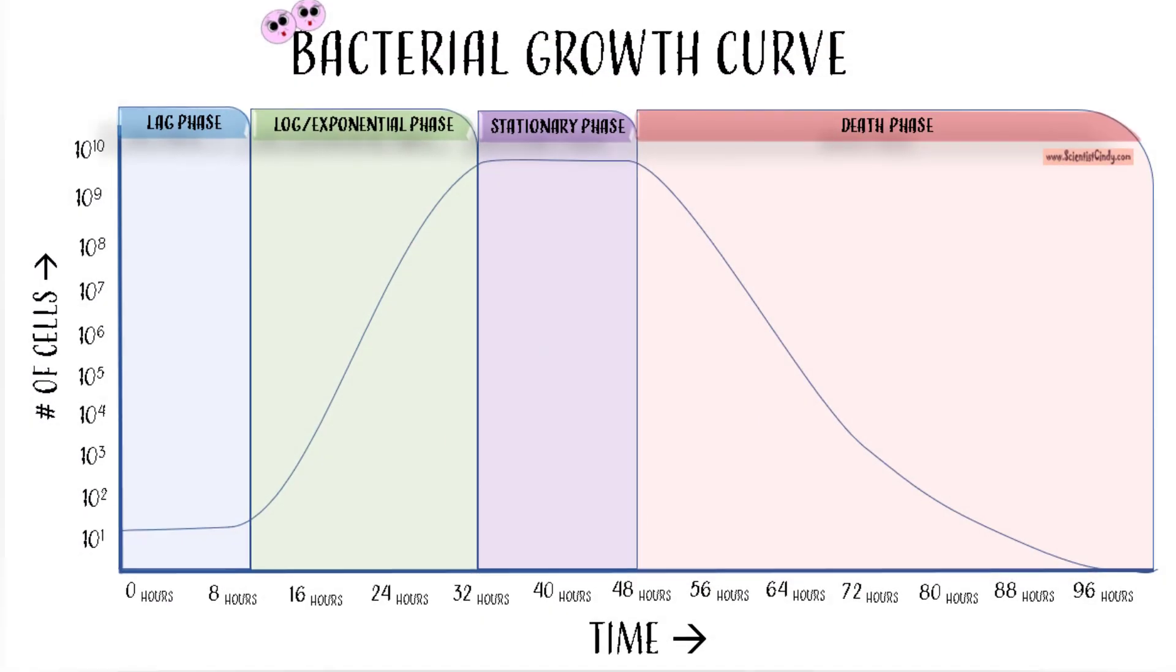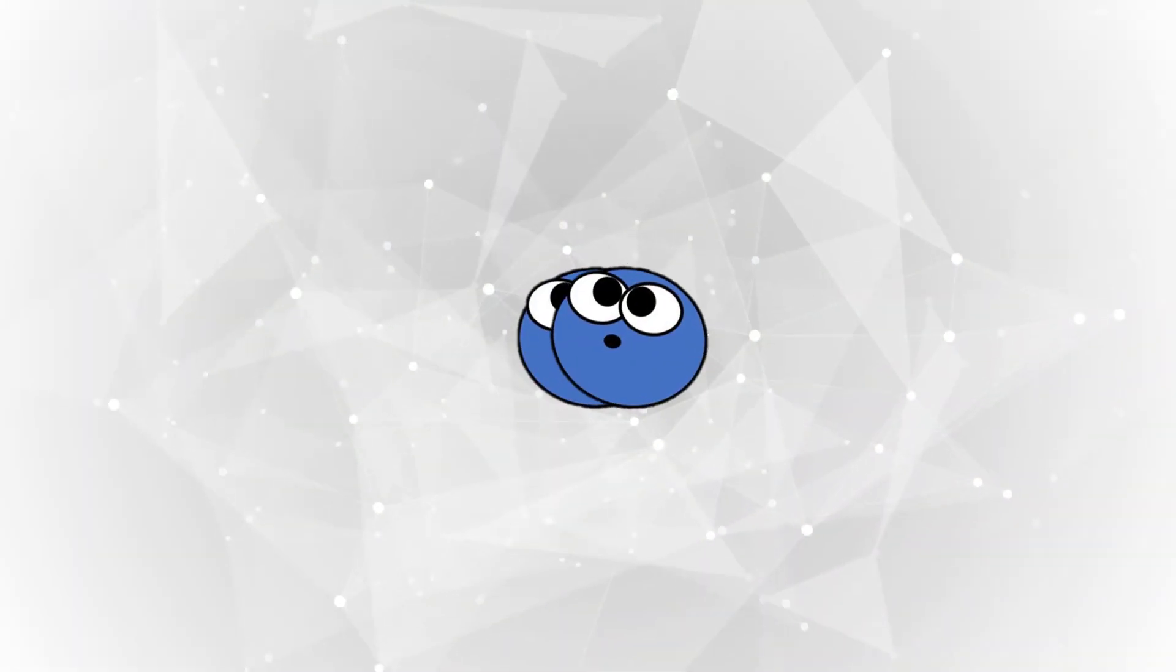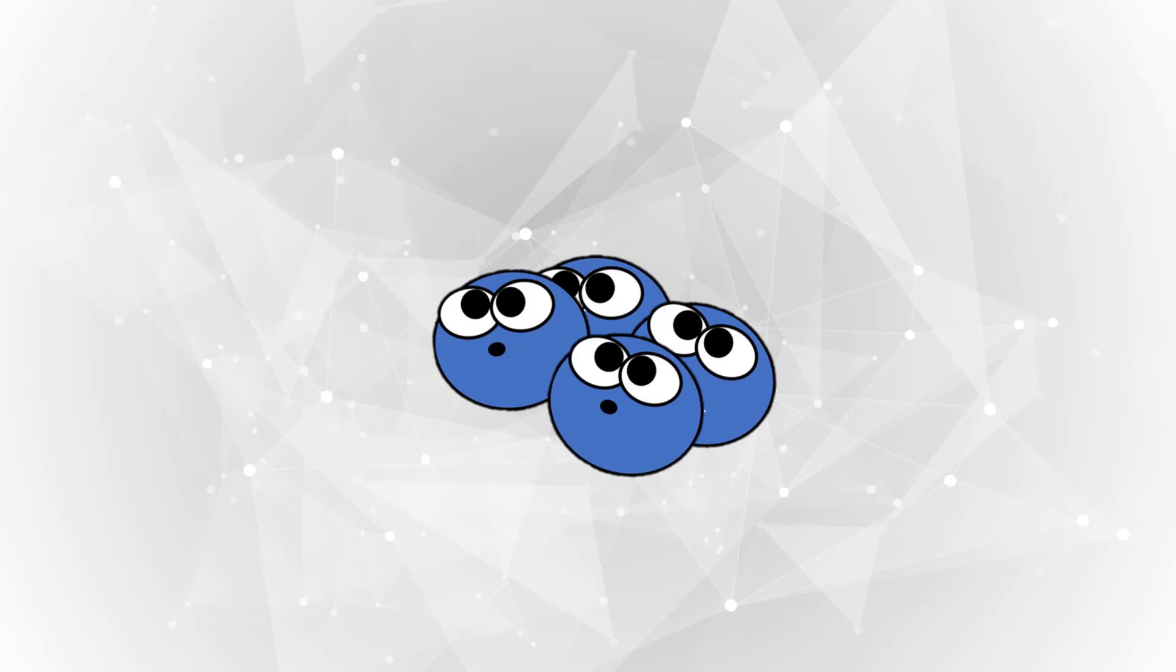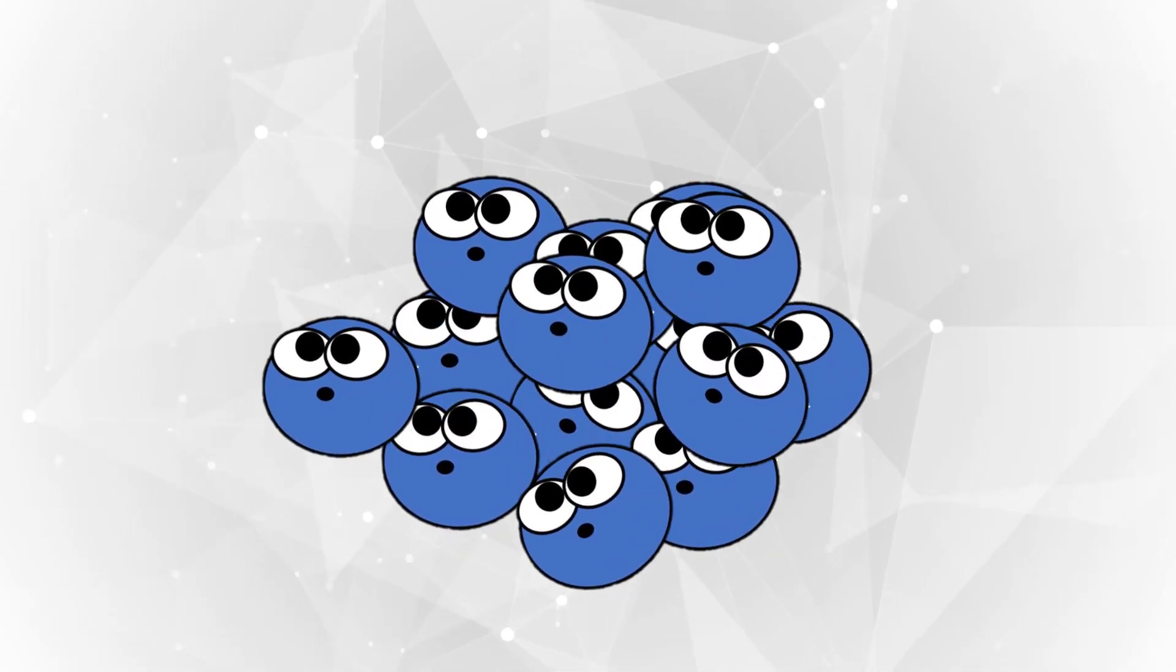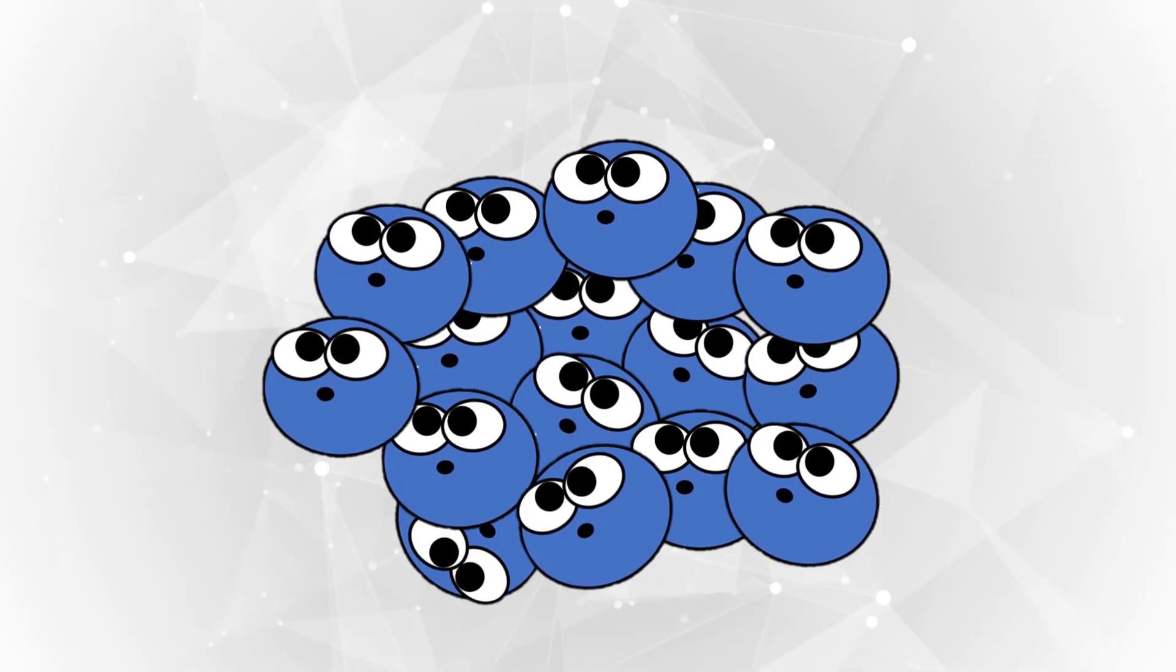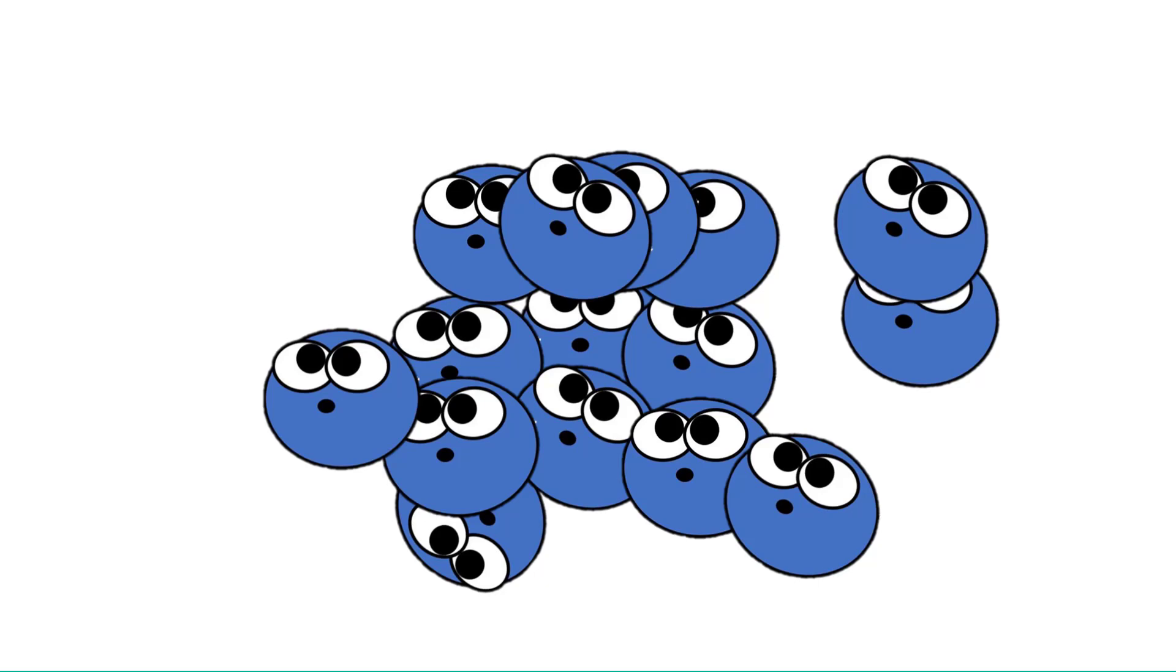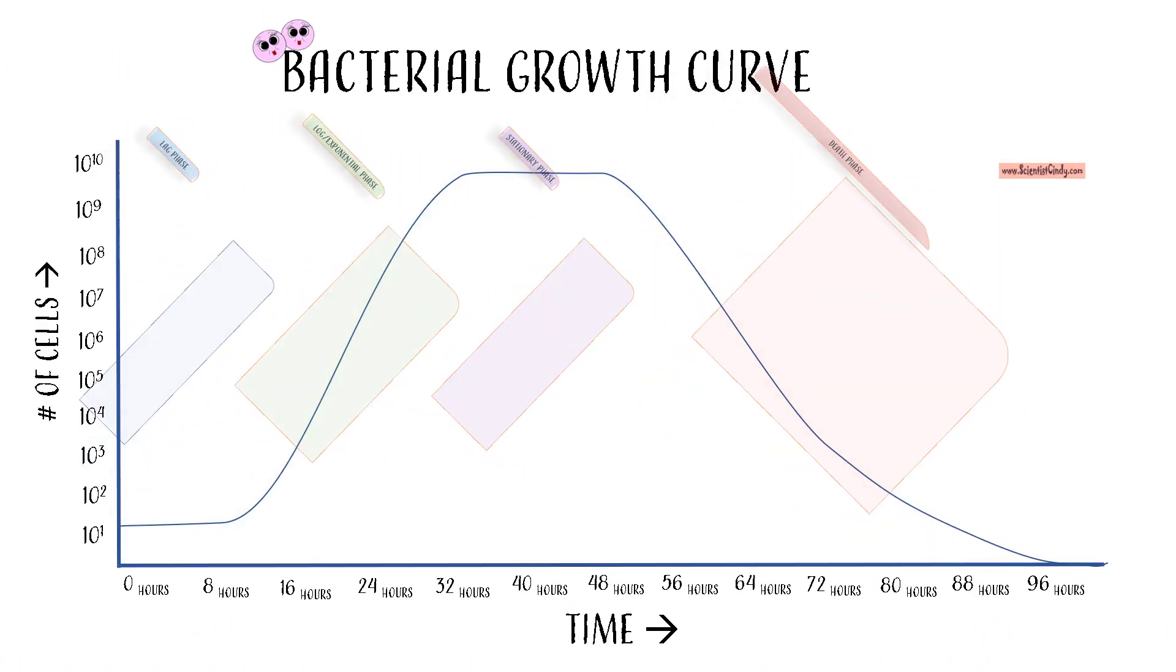Here is an example of one possible growth curve. Keep in mind that the time in which all of these phases will be experienced will vary depending on the amount of available space, available nutrition, and the type of bacteria we are growing in the cell culture. All bacteria growth curves grown in cell culture in the laboratory exhibit the same four following phases.